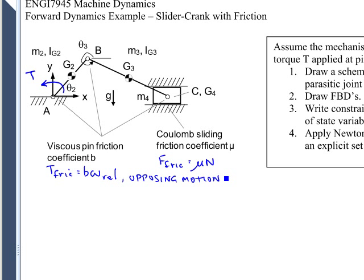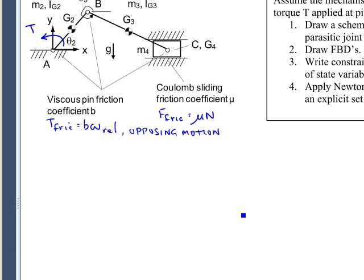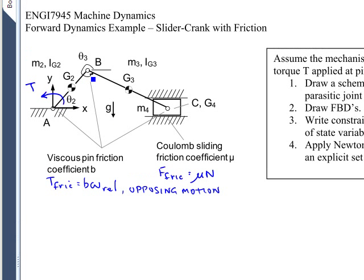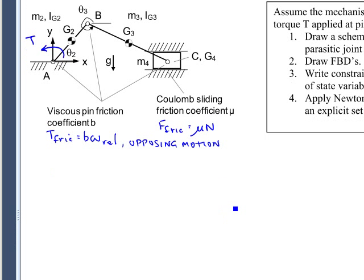The first thing we should do is draw a schematic showing where the stiff springs would go. So we'll put stiff springs at A and B. We'll also put stiff springs in the pin at C. It turns out we can get away without putting stiff springs between the slider and the base.